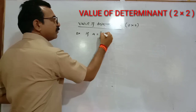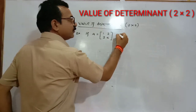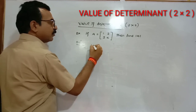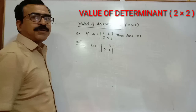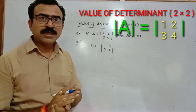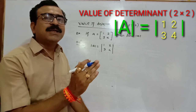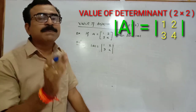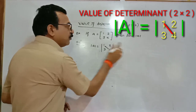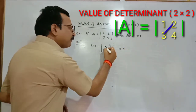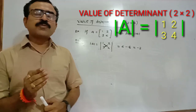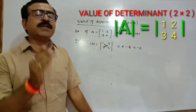If A is equal to this matrix, find the determinant of A. In this example, you are given a matrix of order 2×2. While finding the value of the determinant, perform cross multiplication: 4 into 1 gives 4, minus 3 into 2 gives 6, so 4 minus 6 equals minus 2. In this way we can calculate the value of a 2×2 determinant.